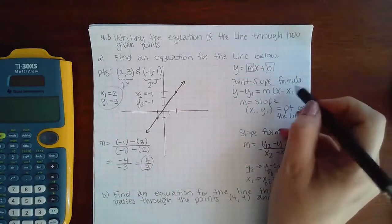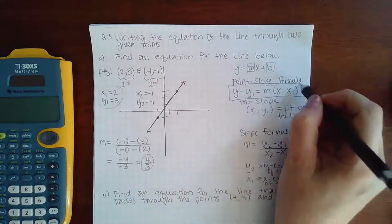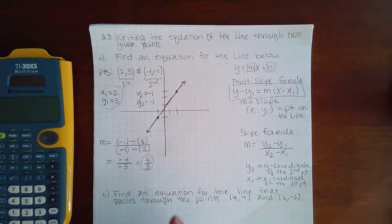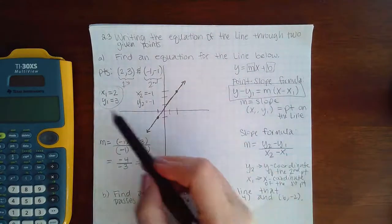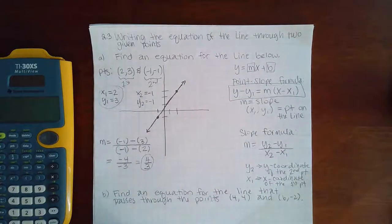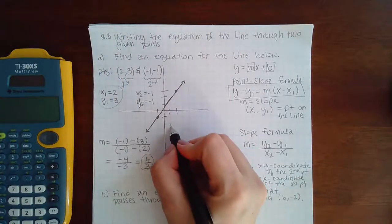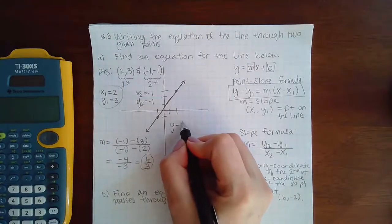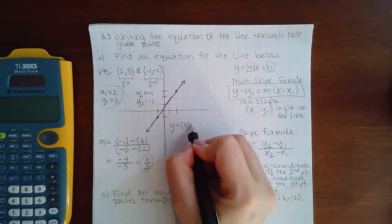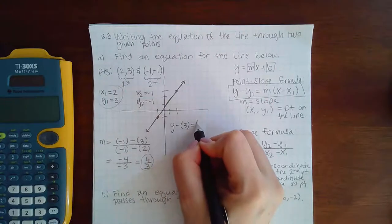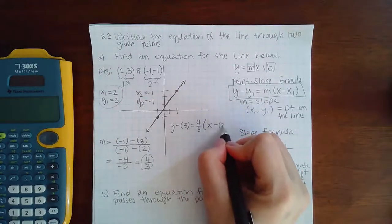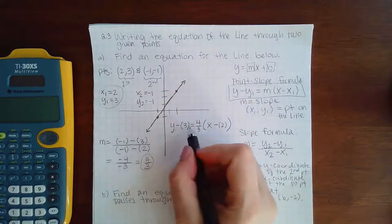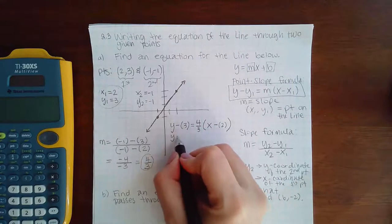Now I can take this slope and these values here, and now I can use the point-slope formula to get my equation. So I'm going to take the m, the x1, and the y1 and come up with my equation. So I have y minus y1, which is 3, equal to m, 4 thirds, times x minus x1, which is 2.